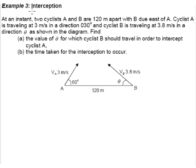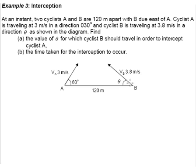Example 3, an interception type of question. Cyclist A is here, cyclist B is here. Cyclist A is moving in this direction at 3 meters per second, while cyclist B is moving in a direction that's unknown at a speed of 3.8 meters per second.